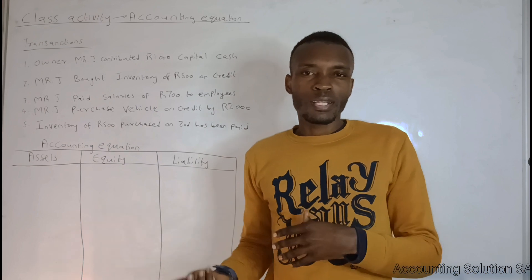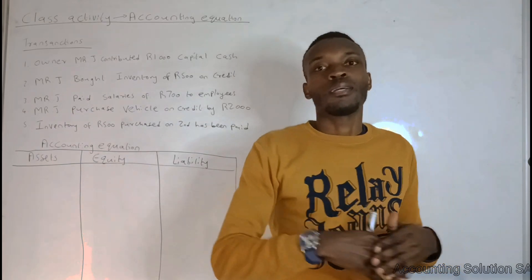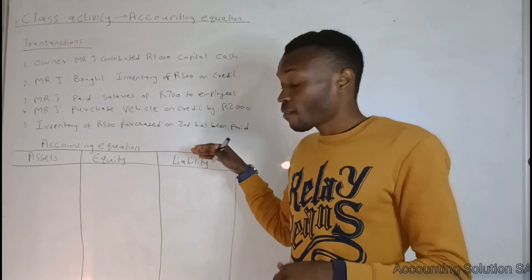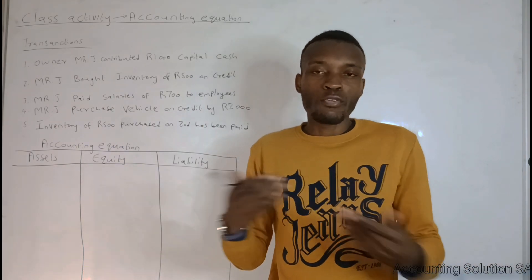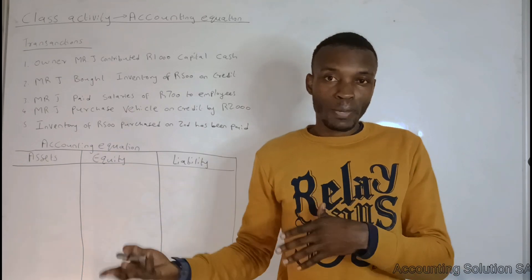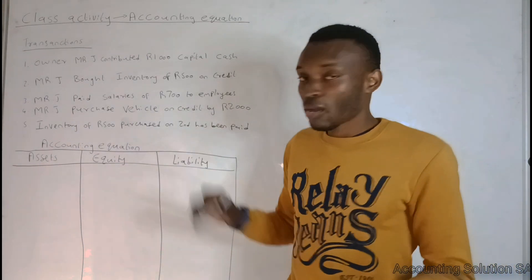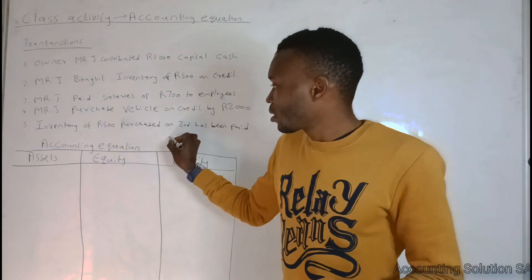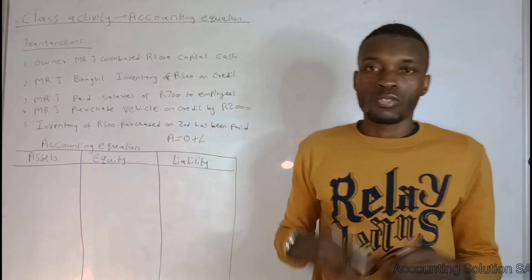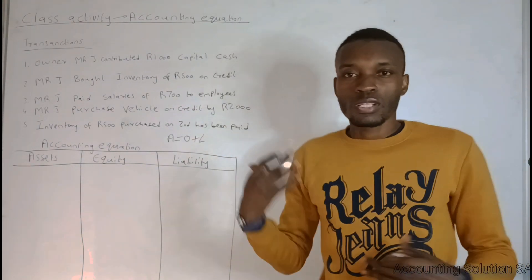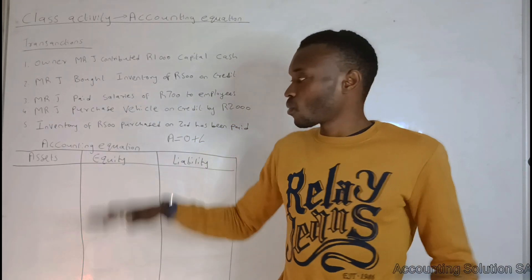When we talk about equity, we have capital, incomes, and expenses — these all fall under equity. Then we have liability. Liability is the amount we owe to someone. If we purchase something on credit, we still have to pay that person, which means we have a liability. The equation is: Assets = Equity + Liability. You'll use this when you prepare a balance sheet.